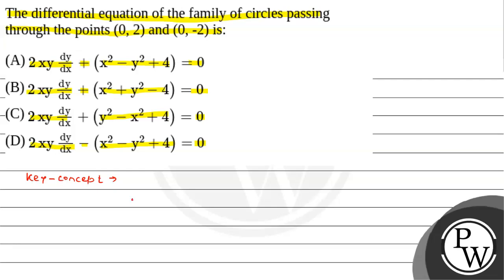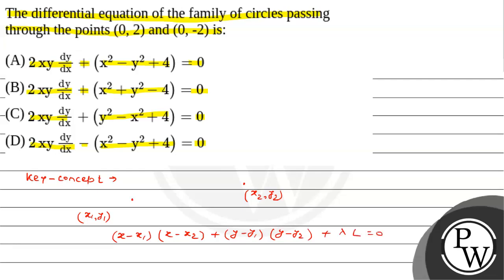Agar hamare paas do point hain — x1, y1 aur x2, y2 — in dono points se pass hone wale circle ka equation hai: (x - x1)(x - x2) + (y - y1)(y - y2) + λL = 0. Jahan L jo hamare in dono points se pass hone wali line ka equation hoga.